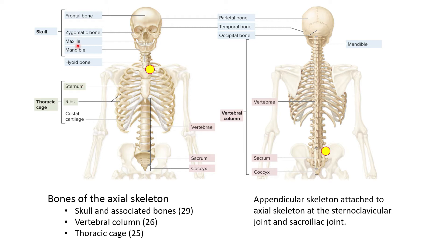There are the bones of the skull, of which there are a total of 29, the vertebral column, which includes 26 bones, and then the thoracic cage, which has about 25 bones. The appendicular skeleton is going to attach to the axial skeleton at two different locations: the sacroiliac joint, which attaches the lower limbs, and the sternoclavicular joint, which attaches the upper limbs.